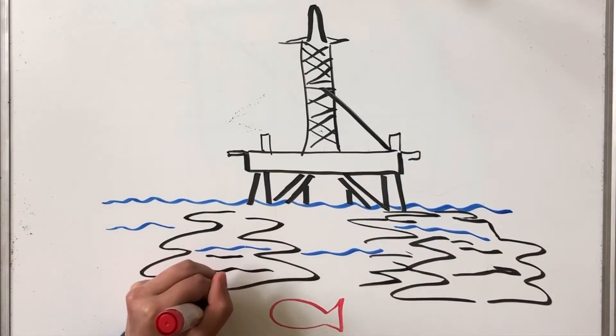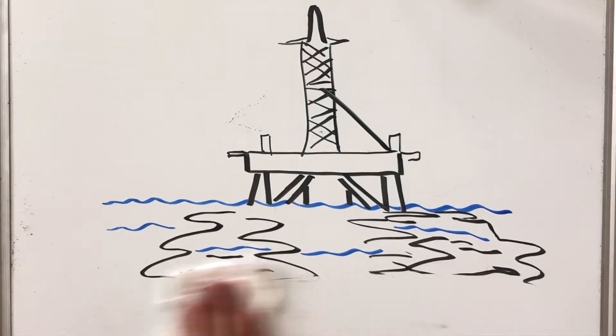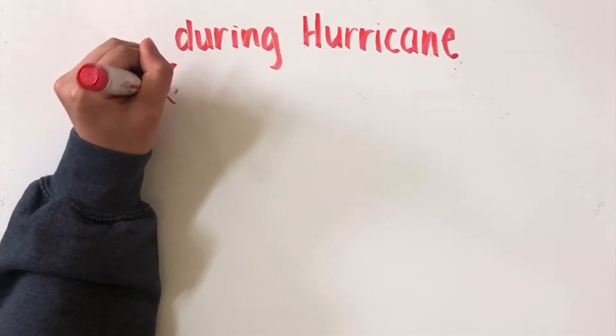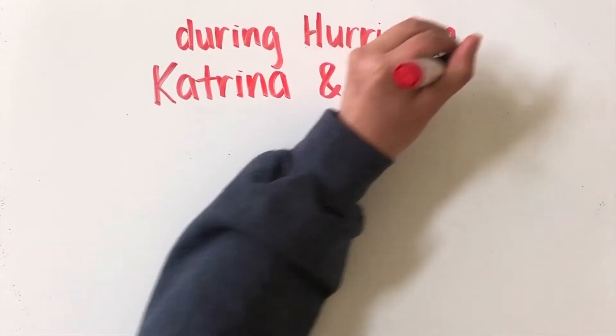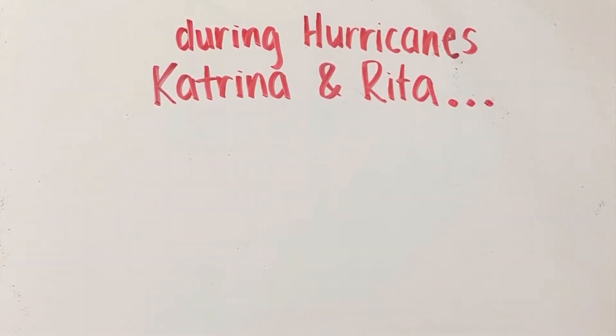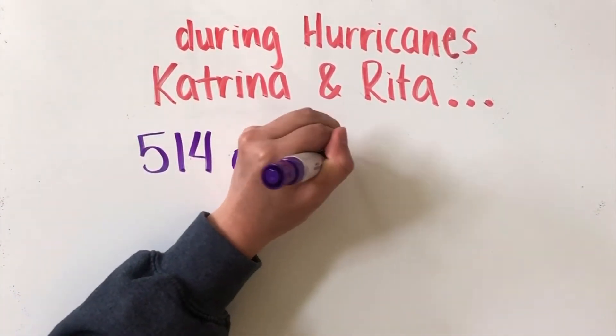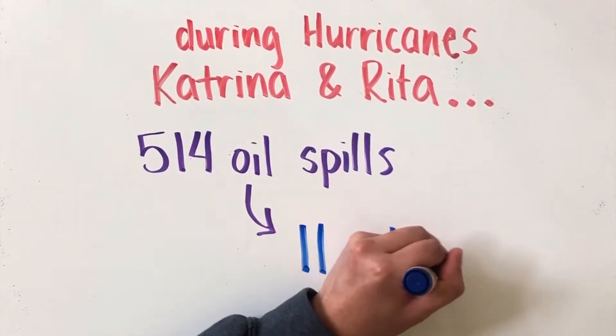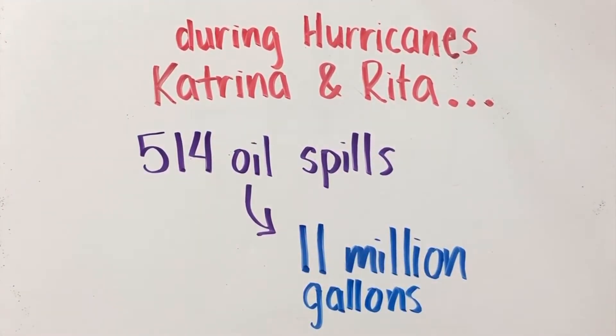However, fracking can involve a whole host of environmental problems, including water and air pollution. The harmful effects of extracting oil and other fossil fuels can be seen very clearly during Hurricanes Katrina and Rita. 514 individual oil spills were recorded, causing 11 million gallons of oil to be spilled into our environment.